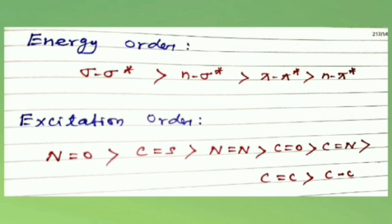Sigma to sigma star, n to sigma star, and pi to pi star are all allowed transitions. N to pi star is a forbidden transition.